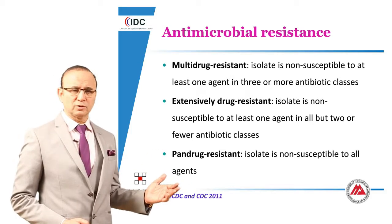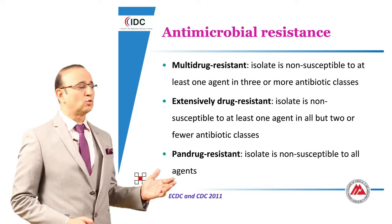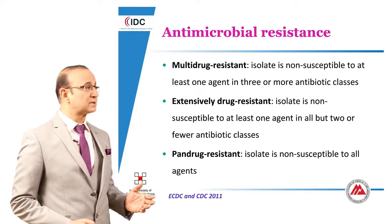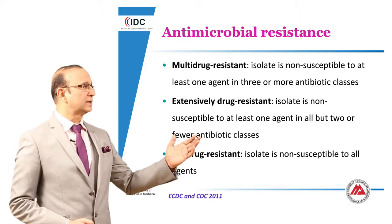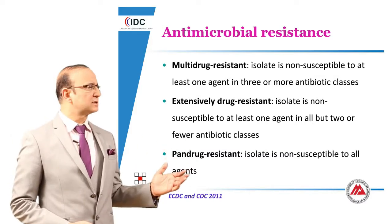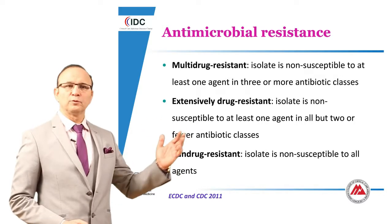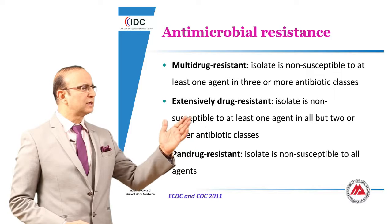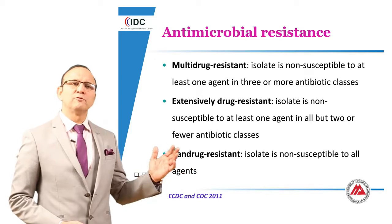There was a lot of confusion about this terminology. The European Centre for Disease Control and the Centers for Disease Control in the USA both published consensus definitions. Multi-drug resistant is when an isolate is non-susceptible to at least one agent in three or more antibiotic classes. Extensively drug resistant is when non-susceptible to at least one agent in all but two or fewer antibiotic classes. Pan-drug resistant is when the isolate is non-susceptible to all agents.